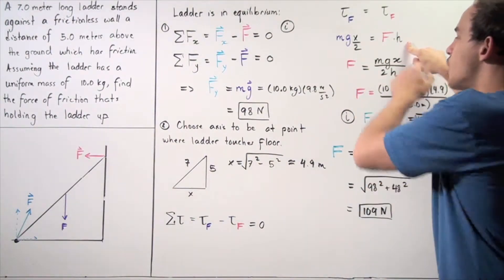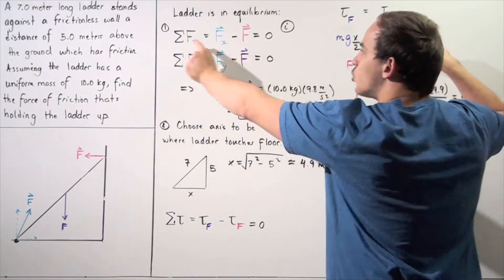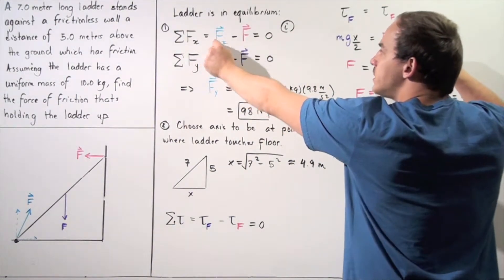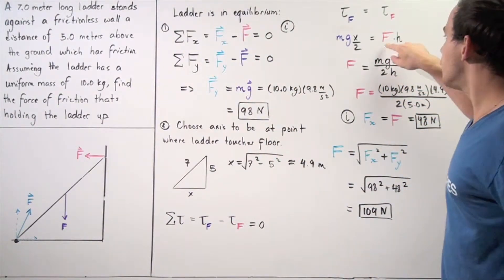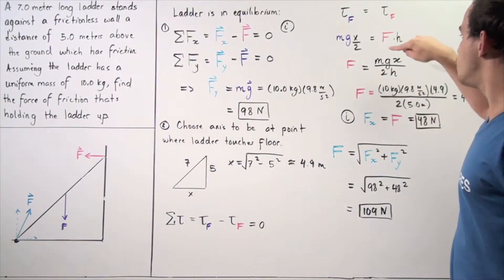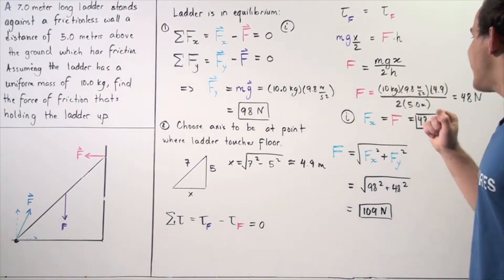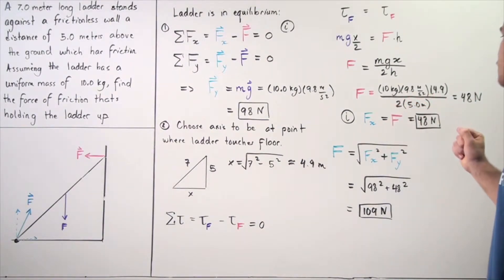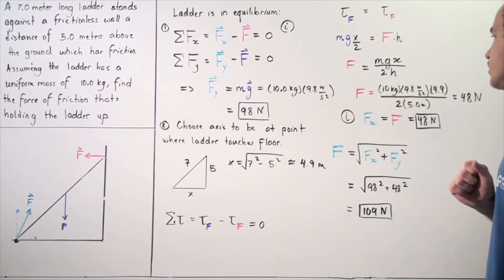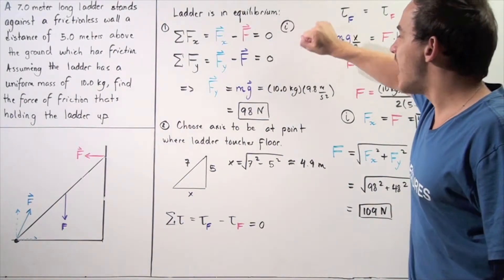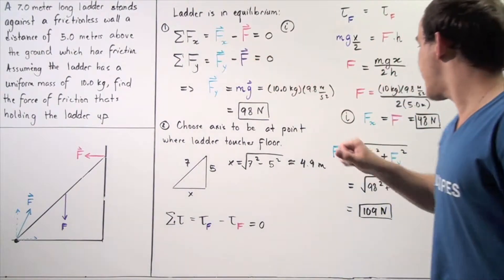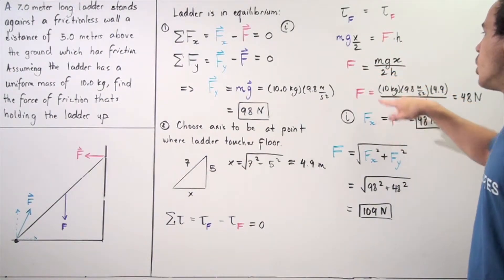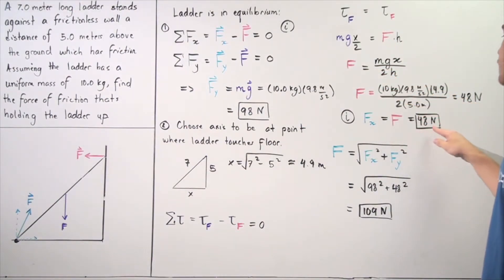We solve for f (the wall force) because equation (i) tells us fx equals f. Rearranging: f = mgx / (2h) = (10 × 9.8 × 4.9) / (2 × 5) ≈ 49 newtons. Using equation (i), the x-component of friction fx equals the wall force f ≈ 48 newtons.